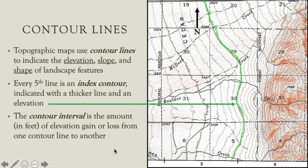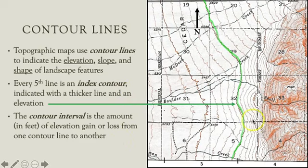The contour interval is the amount in feet of elevation gain or loss from one contour line to another. On this map, the contour lines become more closely spaced from west to east, with the most closely spaced lines indicating the mountain front.